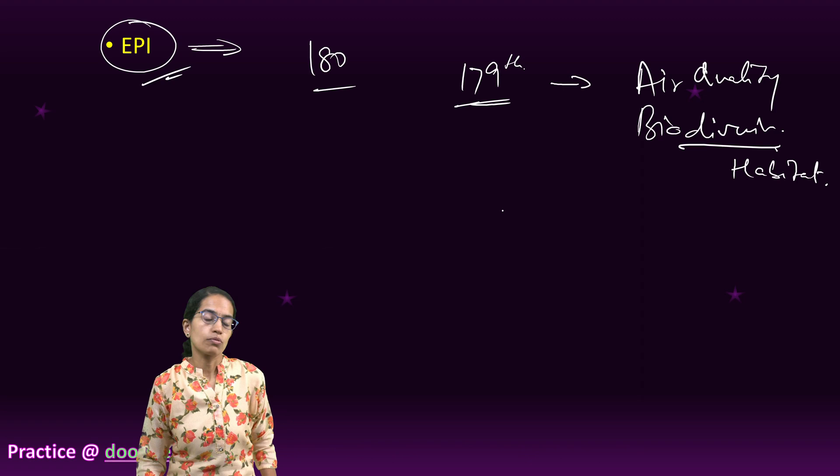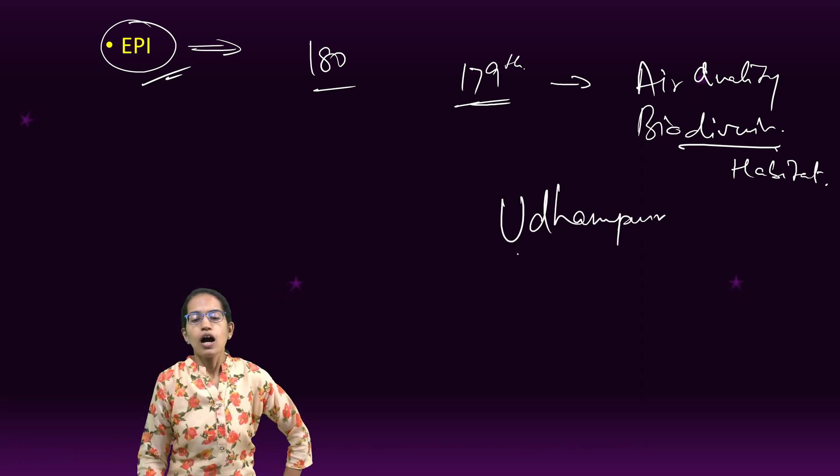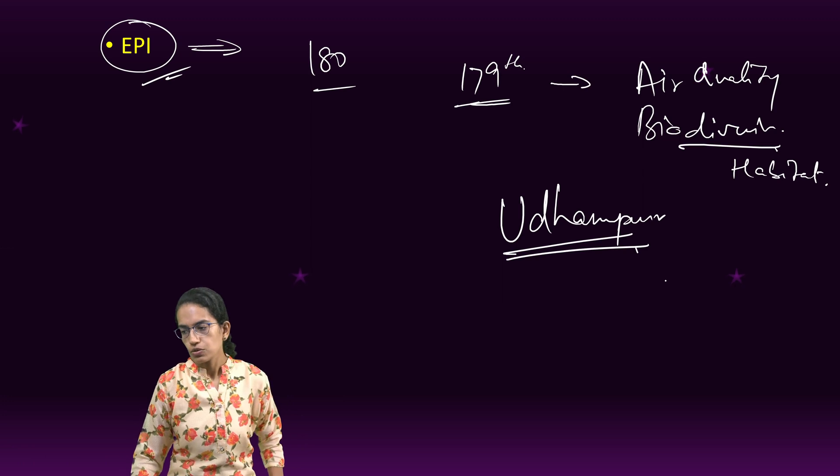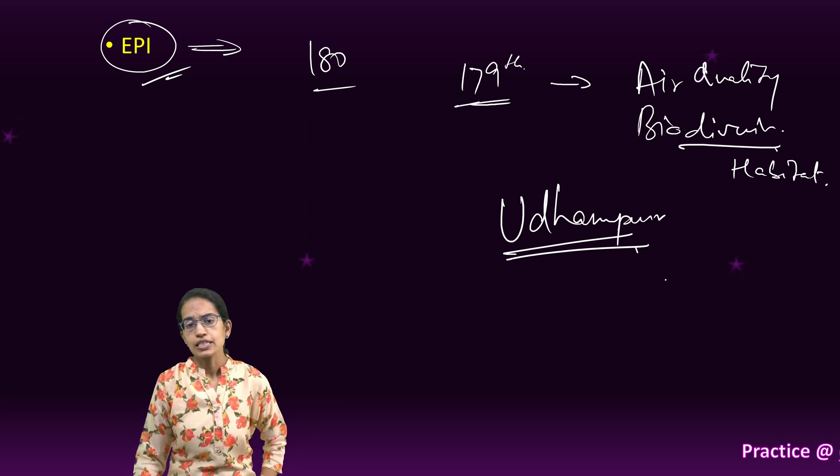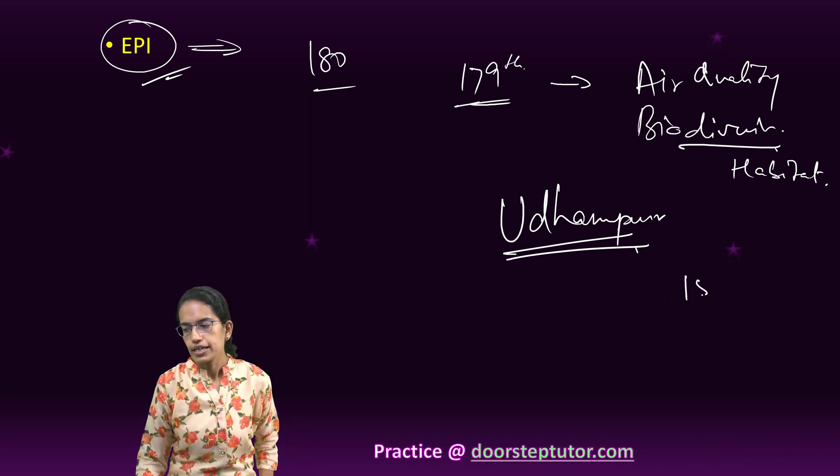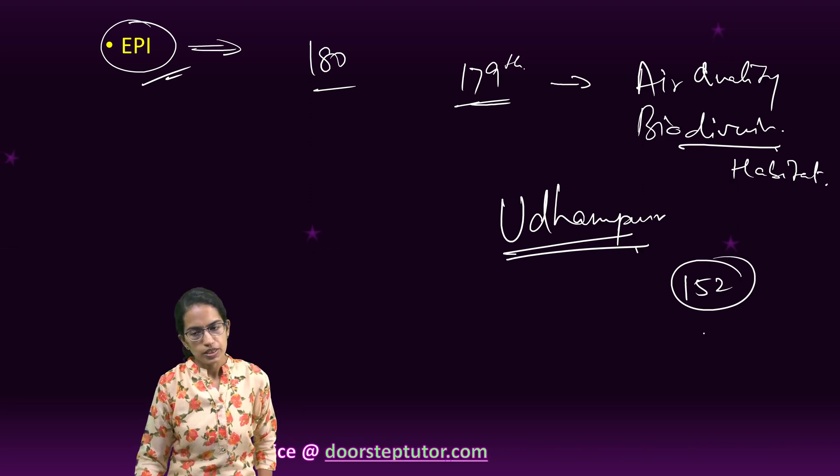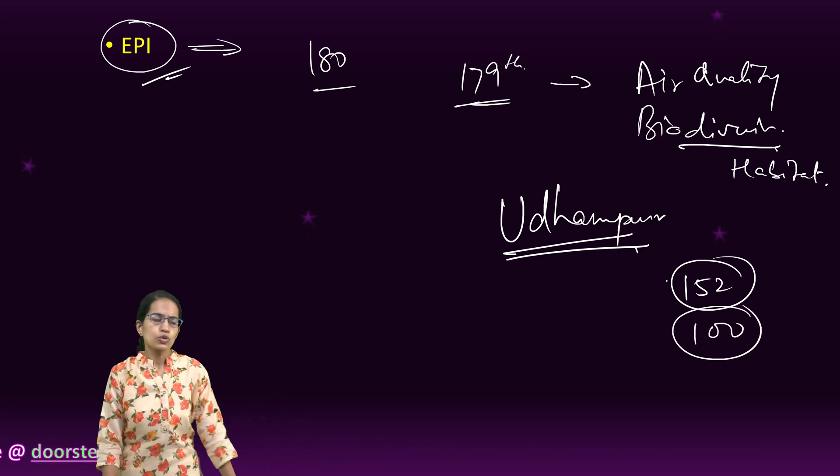Another important is one of the seismological observatories has been established at Udhampur in Jammu Kashmir. Besides Udhampur, there are numerous other centers that have been established, and the National Center for Seismology under the Ministry of Earth Science has this role. Already there are 152 permanent observatories that are there, but 100 more are planned to be installed. So those were some of the key highlights, extremely important from your environmental perspective.